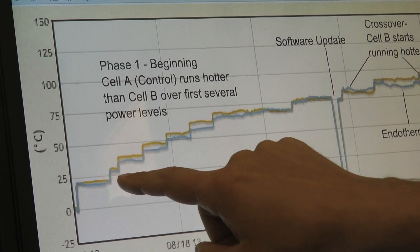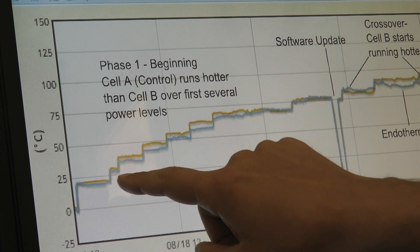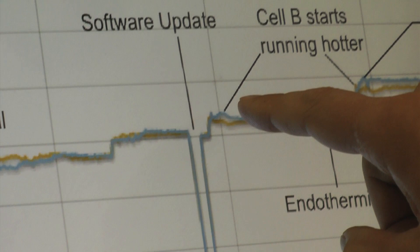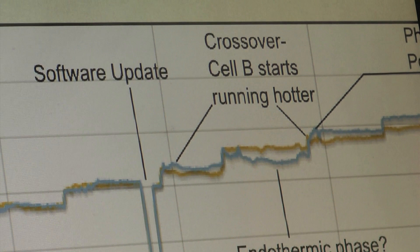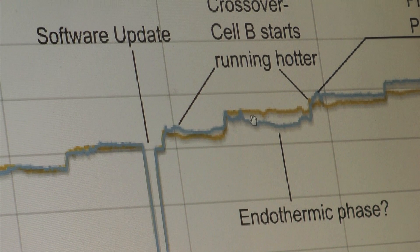Until we get up closer here, and all of a sudden, we have a larger—the power turned off here briefly while we updated the software. We started to have some activity, some non-linearity. For a while it was higher, then for a while it was lower, prompting speculation that that was an endothermic phase.